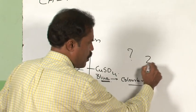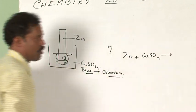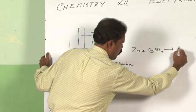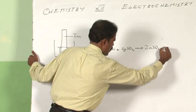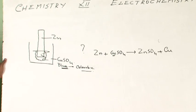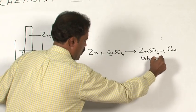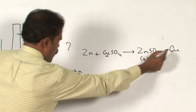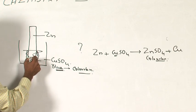Zinc, being a more reactive metal than copper, will displace copper from copper sulfate and form zinc sulfate. The copper from copper sulfate gets deposited on the metal. Since zinc sulfate is colorless, the solution will fade. Since copper gets deposited on zinc, you get a covering of copper on the piece of metal.